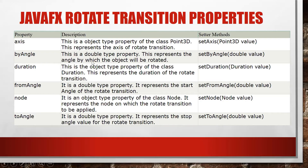You can set setByAngle to 90 or 360 degrees. The duration property uses setDuration() to animate. The fromAngle is a double type property representing the start angle of the rotate transition. The node property — setNode() — specifies which particular node to animate. For example, if we declared a rectangle, we can animate that rectangle.